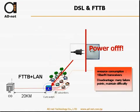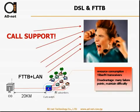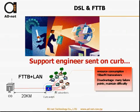If power goes out at just one of those locations, you lose service for all customers connected to it — potentially 100 buildings at once. Your support hotline gets flooded with calls, customers are angry, and you have to send a support engineer to the curb. If two or three switches go down simultaneously, half of your network is offline.